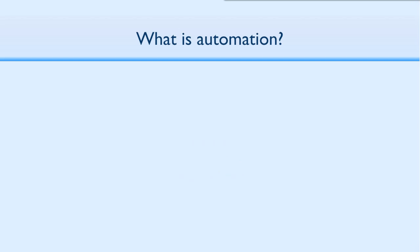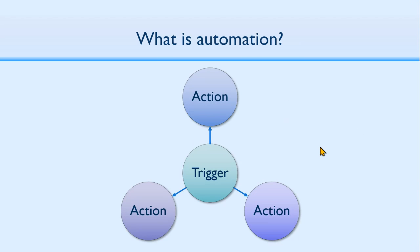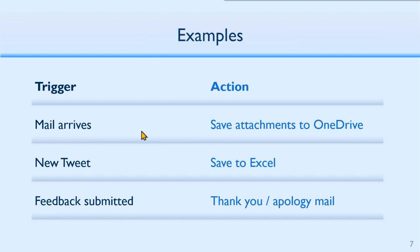There is a trigger and automation. The trigger can be in various things and actions can happen in various applications — that's the whole concept. For example, a mail arrives with an attachment and you want to detach it and put it somewhere — it could be OneDrive, Teams, or SharePoint. Or maybe you have a Twitter handle for your company and you're monitoring relevant hashtags, and you want to create a live database in Excel. A more practical example: you've conducted a survey, and if the rating is low you want some action to happen immediately.